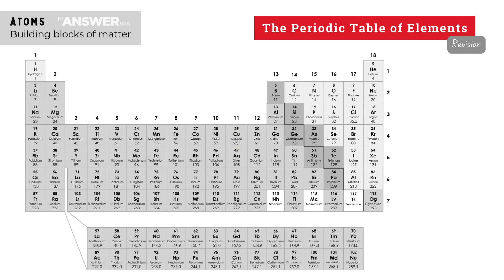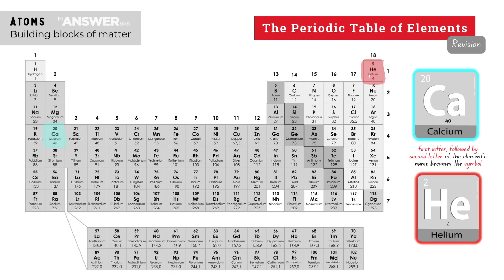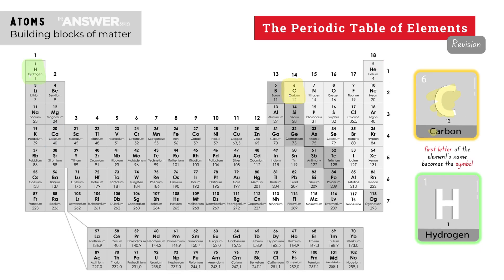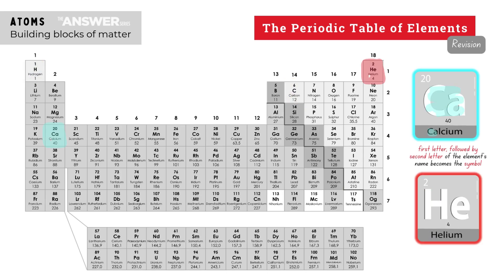The symbol of an element is usually made up of the first letter of its name in uppercase or capital followed by a second lowercase or smaller letter if necessary. For example, carbon has a capital C and hydrogen is a capital H. Ca represents calcium and He represents helium.